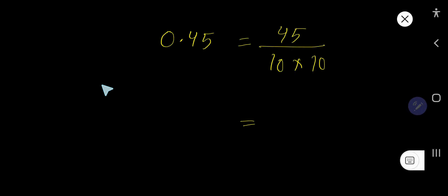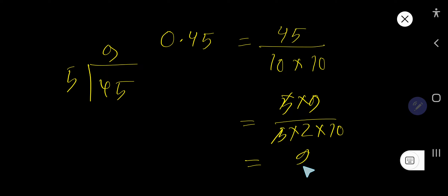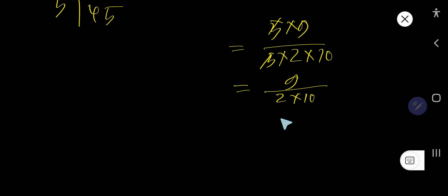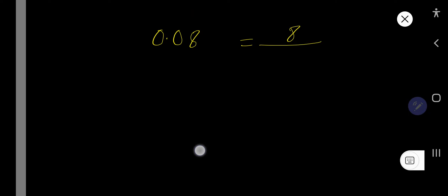Now break down 45: the unit digit is 5, so it is divisible by 5 — 5 times 9. Also break down 100 as 10 times 10, and one 10 as 5 times 2. The 5s cancel each other, so we are getting 9 over 2 times 10, which is 9 over 20. That is the answer.